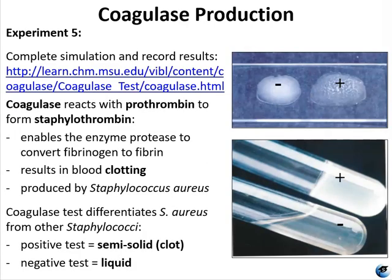For experiment 5, you will perform a simulated coagulase test. Coagulase works in conjunction with normal plasma components to form protective fibrin barriers around individual bacterial cells, shielding them from phagocytosis and other types of host attack. The coagulase test is used routinely to differentiate Staphylococcus aureus from other species of Staphylococcus. Staphylococcus aureus can be highly resistant to both normal immune response and antimicrobial agents due, in part, to its production of coagulase.